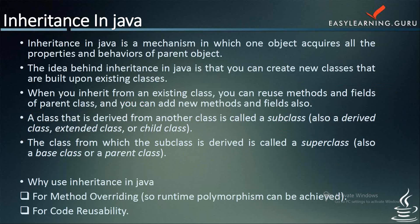The idea behind inheritance in Java is that you can create new classes that are built upon existing classes. When you inherit an existing class, you can reuse the methods and fields of the parent class, and you can also add new methods and fields. Inheritance defines an is-a relationship between the super class and its subclass. We use the keywords 'extends' and 'implements', which are used to describe inheritance in Java.